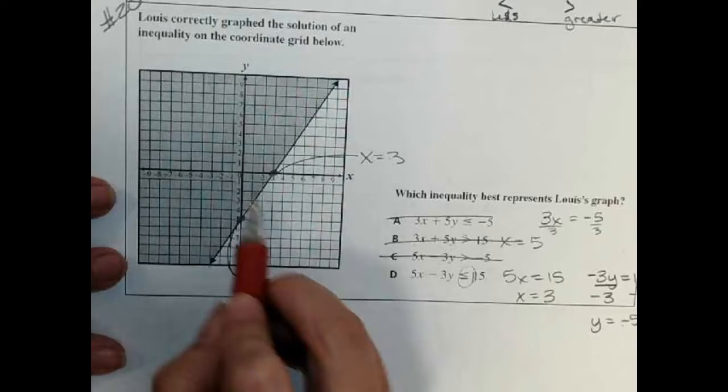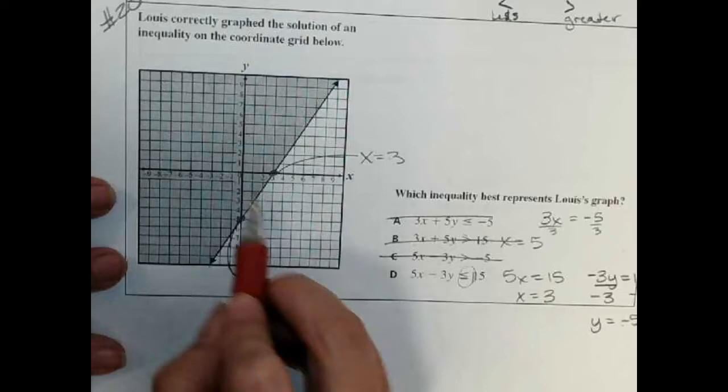By plugging in the point (0,0) here: zero times 5 is zero, minus 3 times zero is zero. Zero is less than or equal to 15. It is! This is the right one.